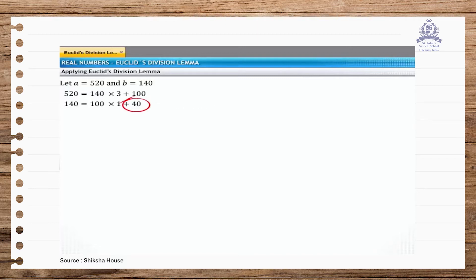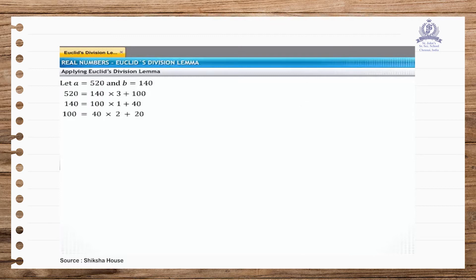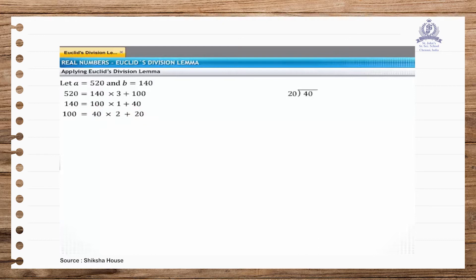Since R is still not 0, we apply Euclid's division lemma taking 100 as A and 40 as B. Dividing 100 by 40, we see that 40 goes into 100 two times and leaves a remainder of 20. Since R is still not 0, we apply Euclid's division lemma taking 40 as A and 20 as B. Dividing 40 by 20, 20 goes into 40 two times and leaves a remainder of 0. The value of R has become 0, so the value of B, that is 20, is the HCF of 520 and 140.